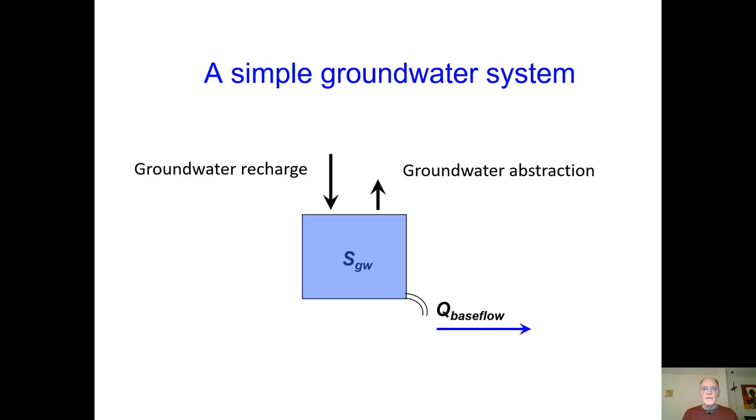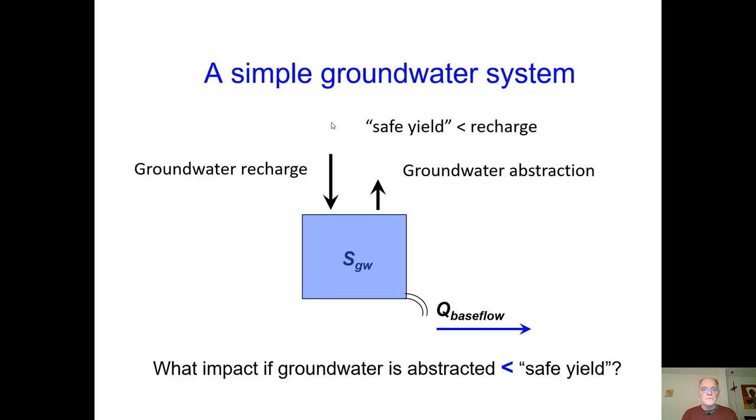We can abstract groundwater at a certain rate, which is less than the recharge rate. Question. What is the impact if groundwater is indeed abstracted at half the amount that groundwater is recharged? Would it affect the baseflow?